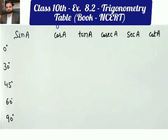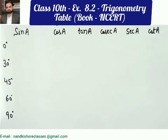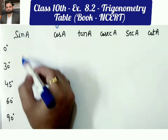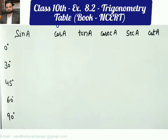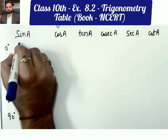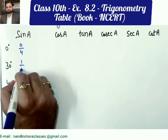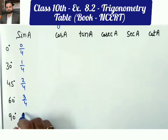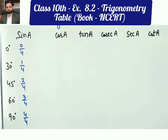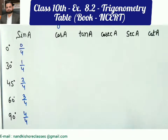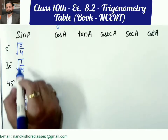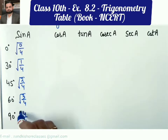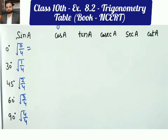So let us first learn this table. First of all we are going to talk about the column having sine — that means the first column. For learning these values there is one easy method: first of all, write 0/4, 1/4, 2/4, 3/4, and 4/4 in sequence. The numerators are in sequence 0, 1, 2, 3, 4 and the denominator is 4 everywhere.